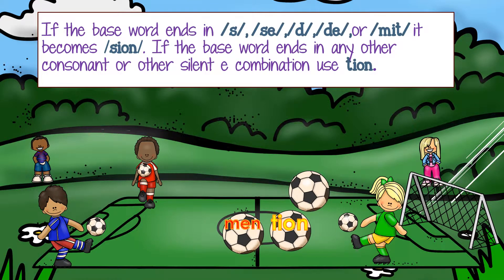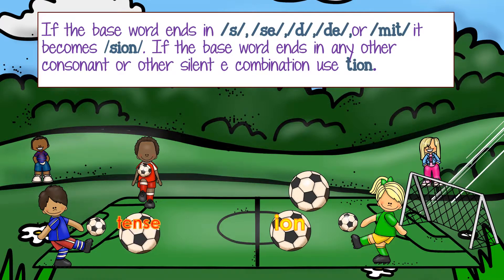Here we have 'mention.' The base word doesn't always end in a T. In this case, there isn't really a base word — it's just 'men' and then the sound 'shun': mention. Here we have a base word, 'tense.' But when we add I-O-N, we need to take off the single silent E at the end of the word and then it becomes 'tension.'